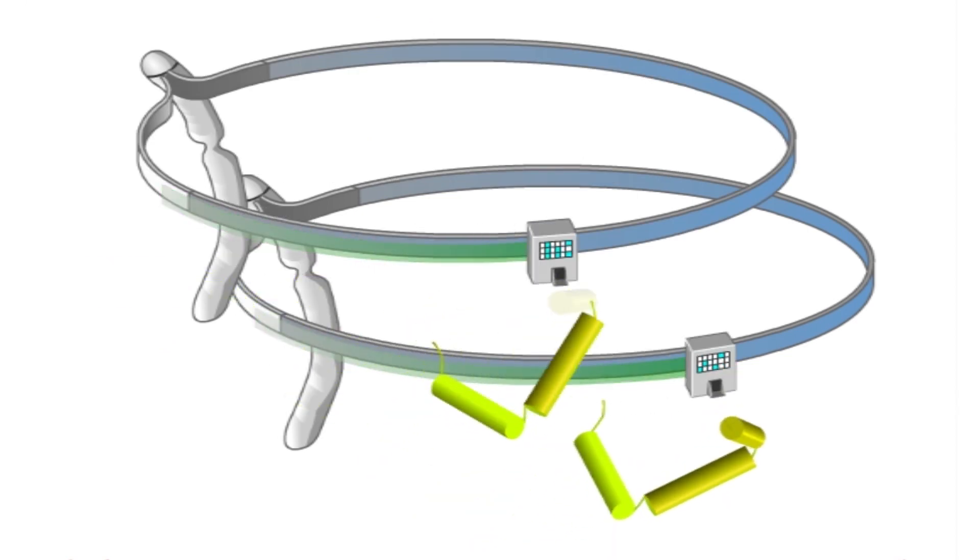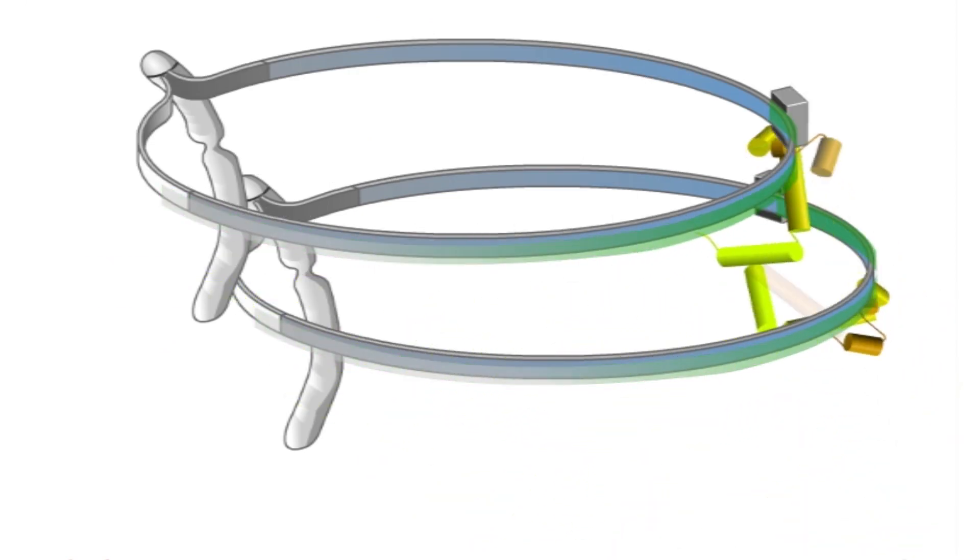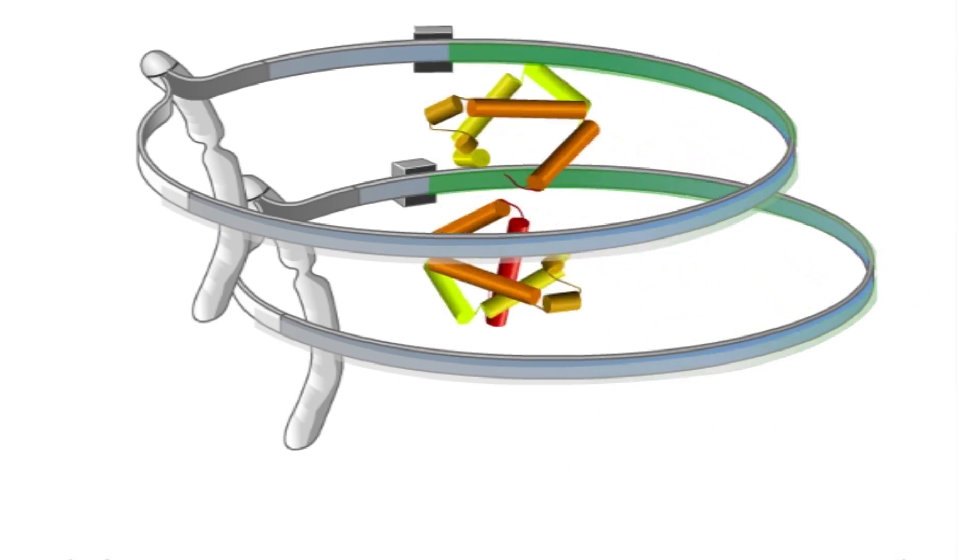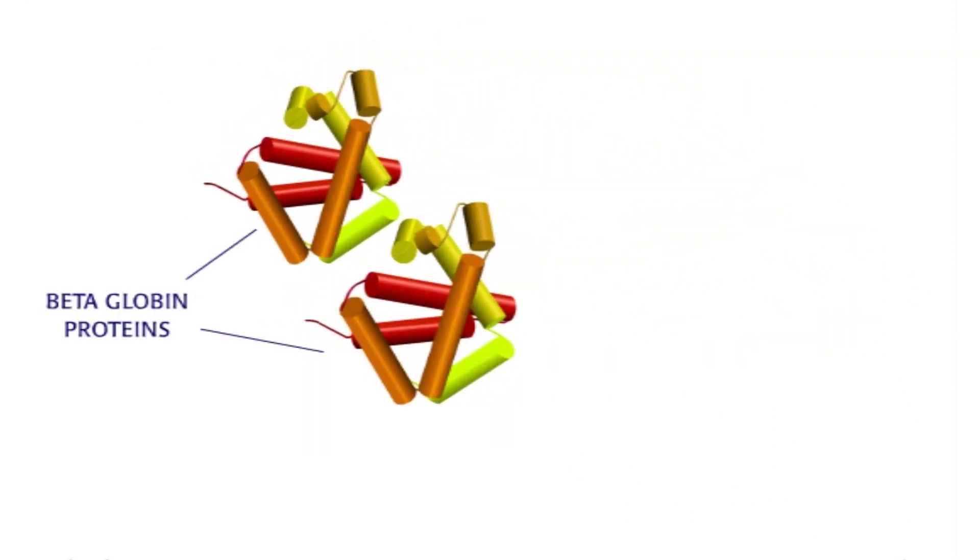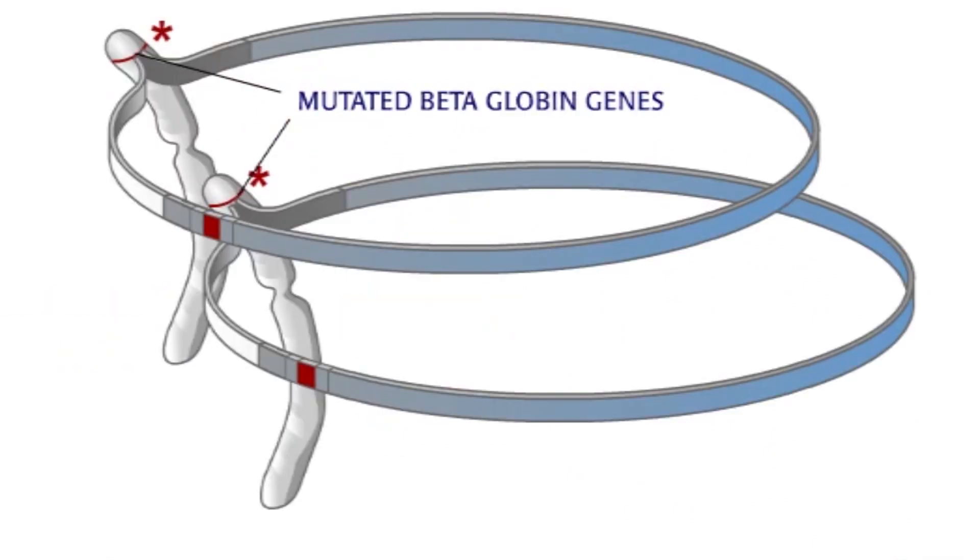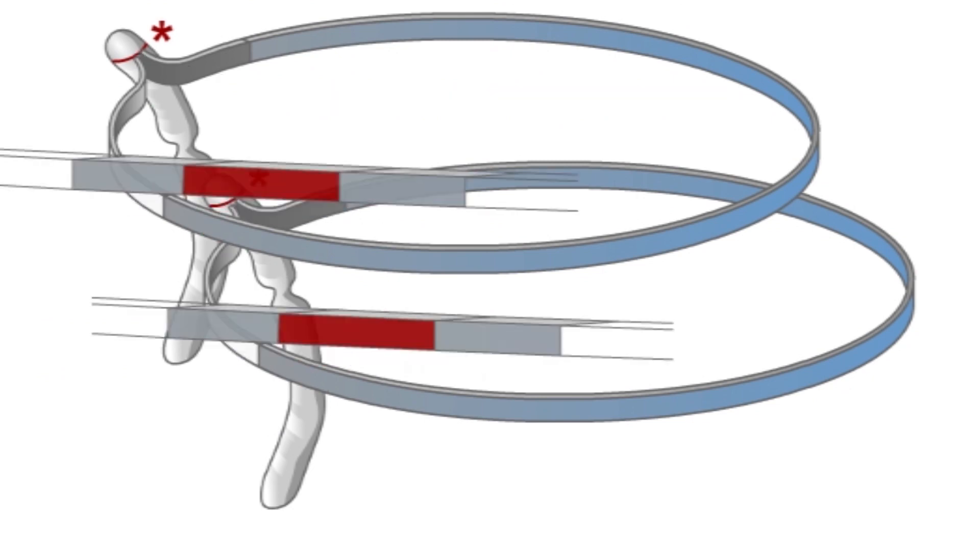The cellular machinery in every newly developing red blood cell reads the gene's instructions to build beta globin proteins. However, in a person with beta thalassemia, the two copies of the gene contain mutations that garble the instructions.